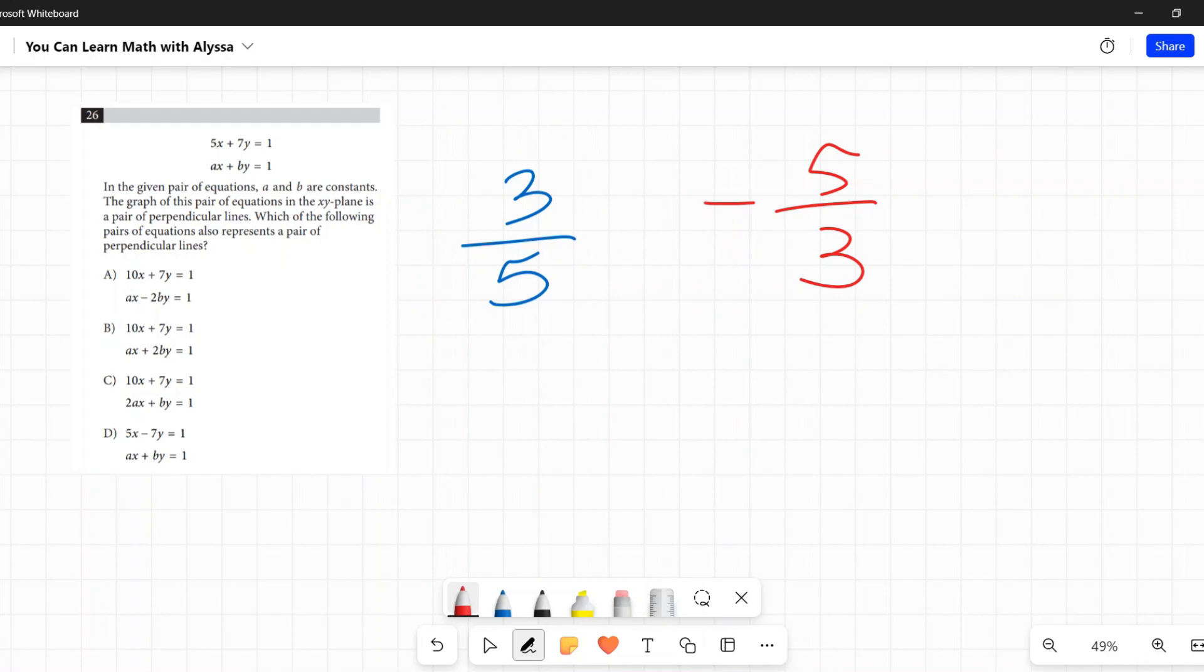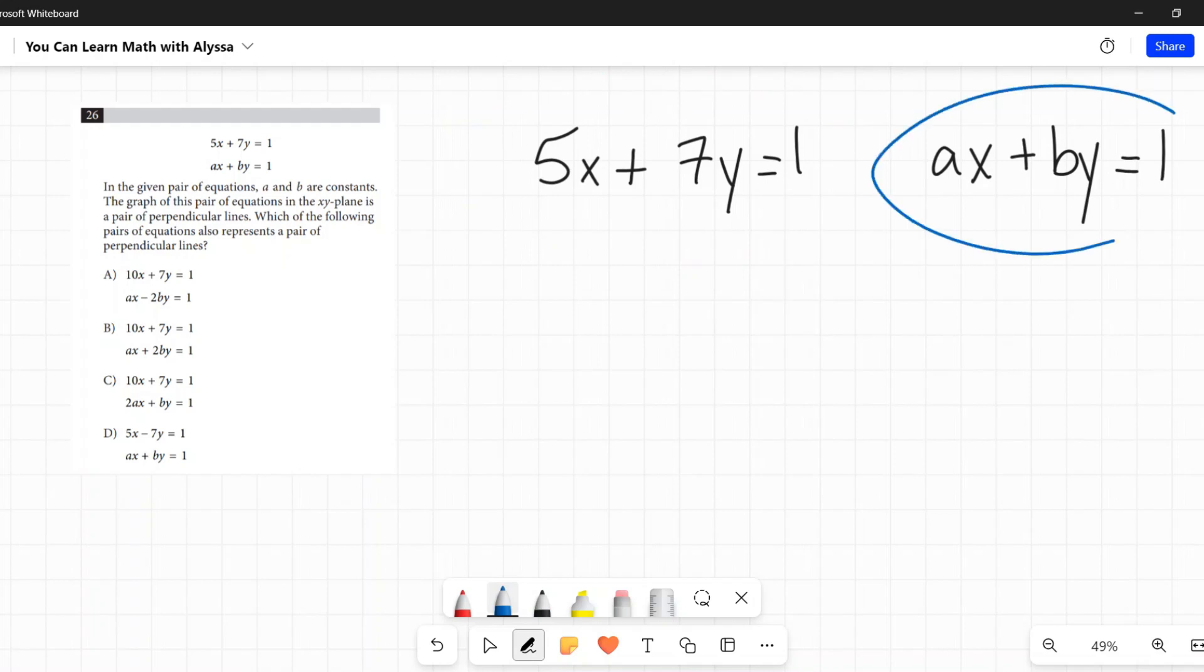Okay, so that is the fact about the slopes. Now we have two lines that they give us and the first one has numbers in it, actual numbers that we can see, 5x plus 7y equals 1. And the other one has constants, but we don't know what they are. The a and the b are constants. We're told that right here, but we don't know what they are. They are numbers. So let's find the slope of this first one and then we'll know what the slope of this line must be because they are perpendicular to each other.